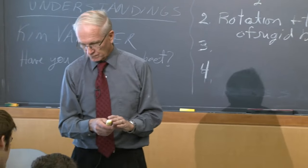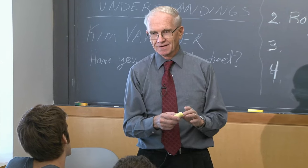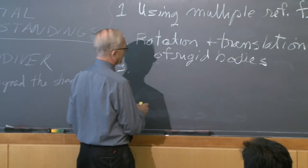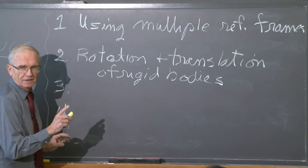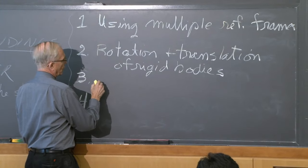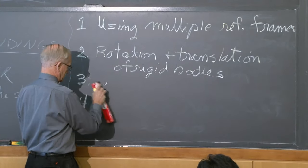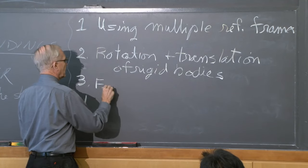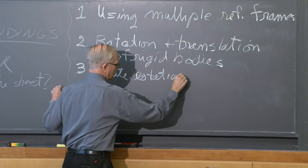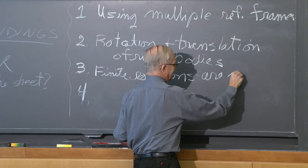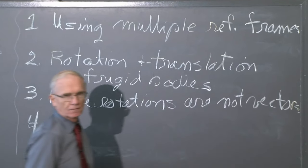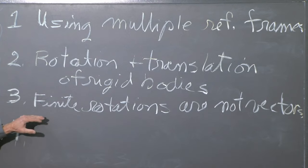I'm going to bring up that infinitesimal displacements and velocities can be considered vectors. This is actually quite important. I'm going to write it slightly differently — we need to talk about this. And that is that rotations — to be absolutely correct — finite rotations are not vectors. I want to come back to that in a minute, as I'm going to get lots of possible confusion around that.